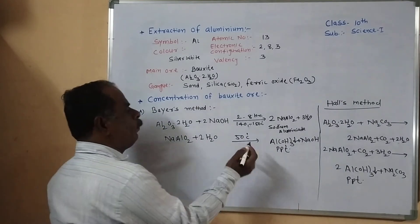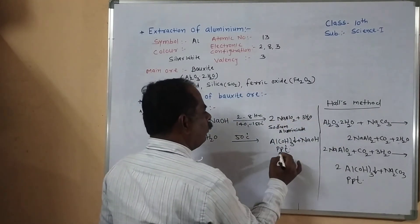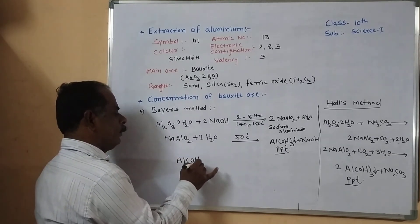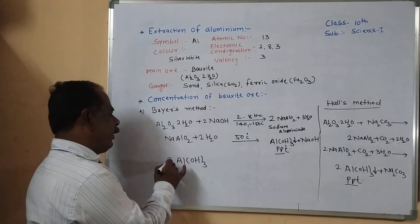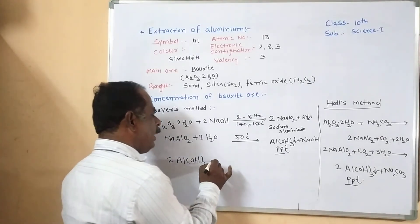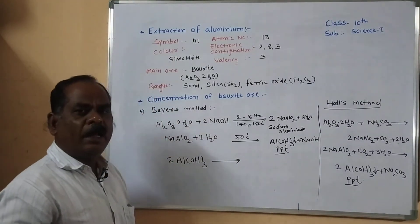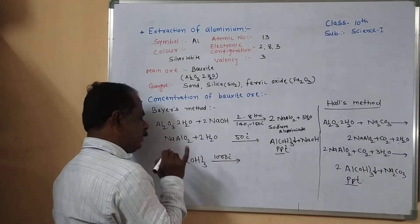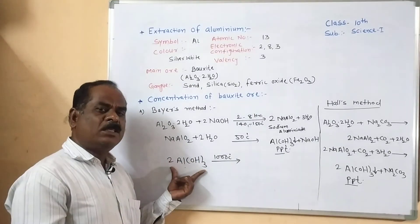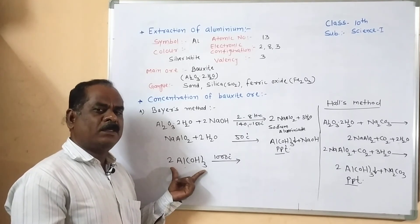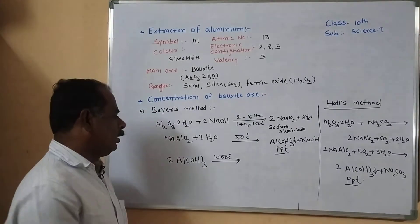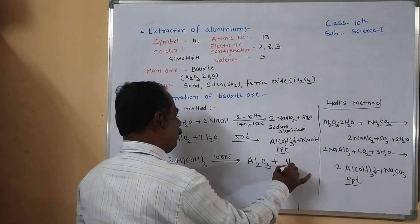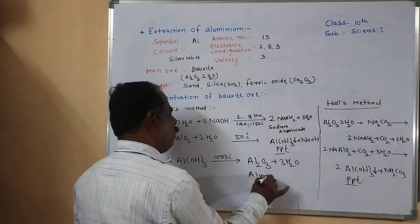In both the Bayer method and Hall method we obtain a precipitate of aluminum hydroxide. This precipitate is collected and calcination is carried out. Calcination means heating the aluminum hydroxide precipitate in the absence of oxygen or in less oxygen. First wash the precipitate, then heat it. This removes the water molecules and we get pure alumina Al₂O₃.